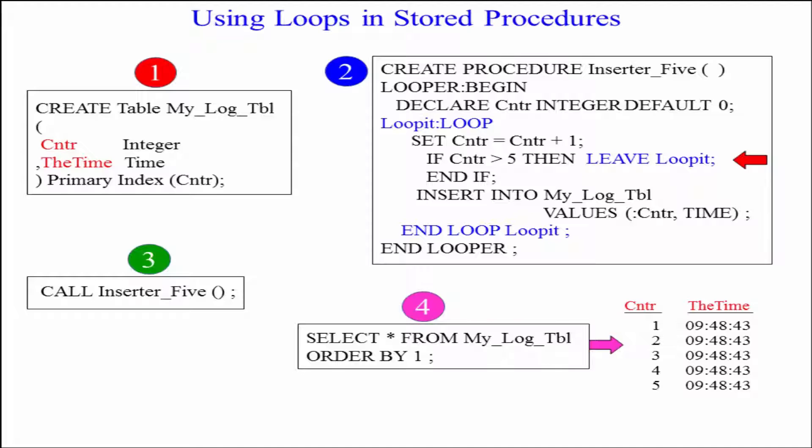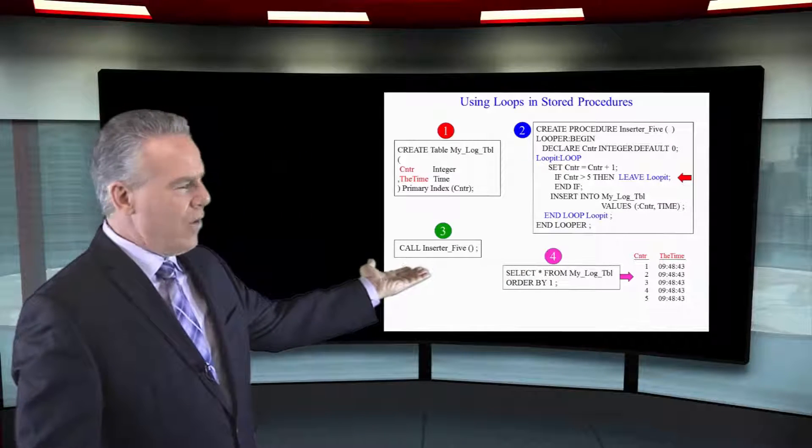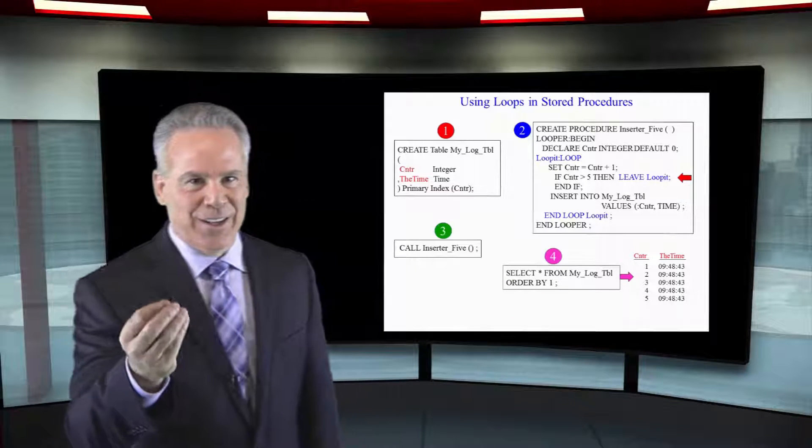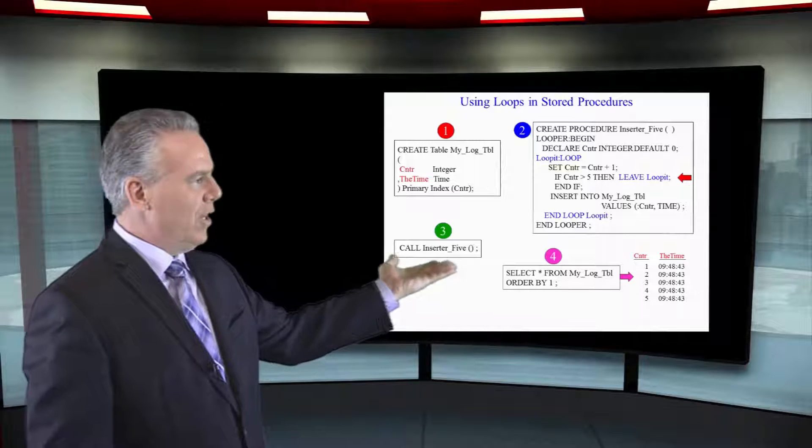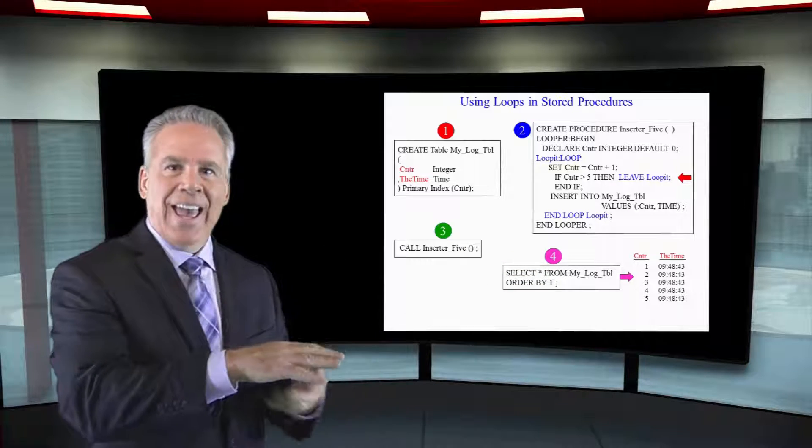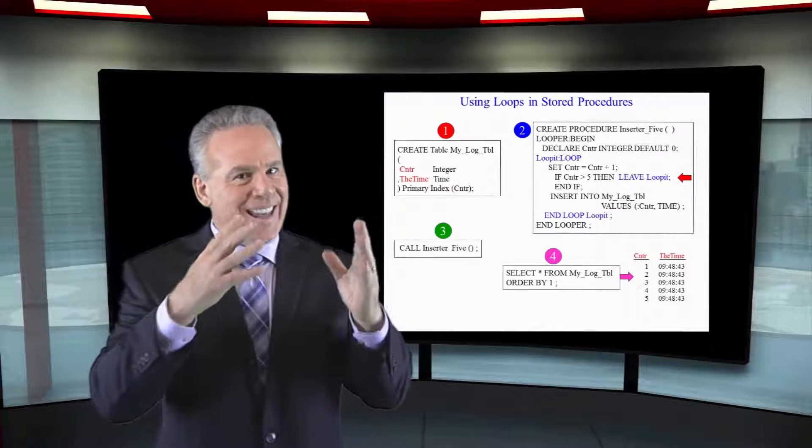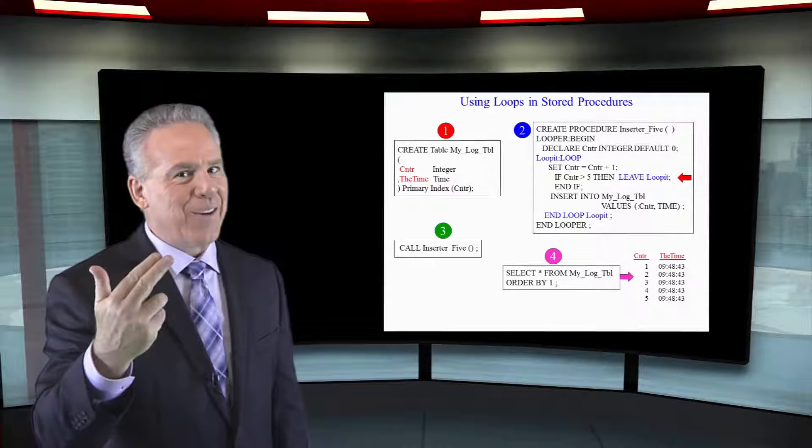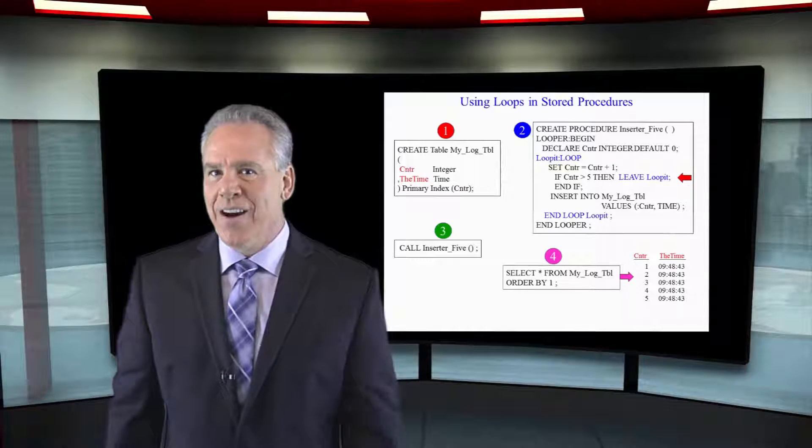Here, I'm declaring a variable right away called counter. It's an integer. I gave it a default to start of zero. Now, once I'm in the loop, I set counter equal to counter plus one. So the first time it comes in, it's a one. Then I'm going to say, if the counter is greater than five, then leave loop it. And it knows to end the loop. If not, it's going to do what I tell it to do. I say, insert into my log table, counter, and then the time. And then it loops again, adds one to it, loops again, adds one to it until it finally reaches the end of the loop because counter is greater than five. And that's the real purpose of great stored procedures.